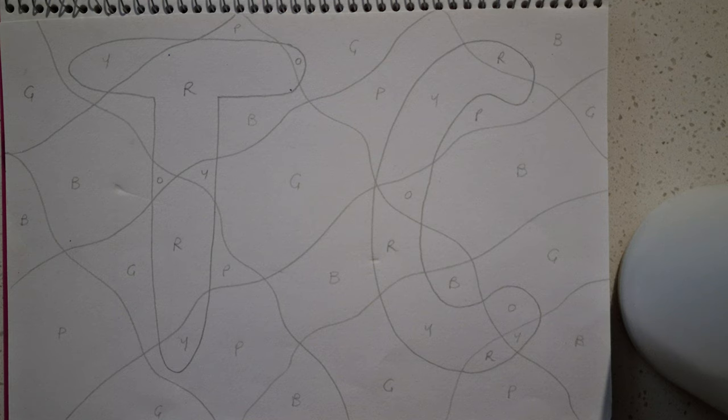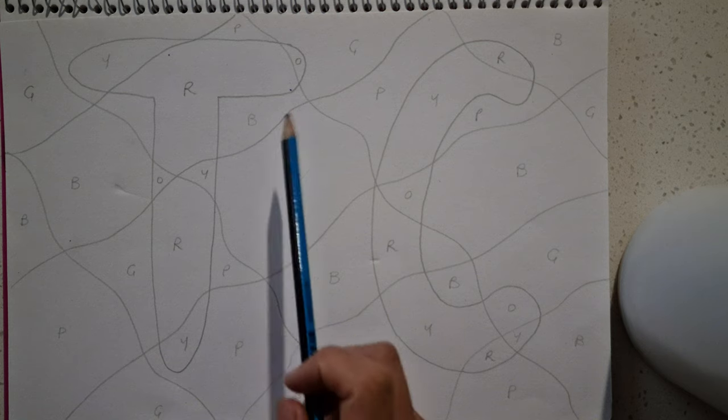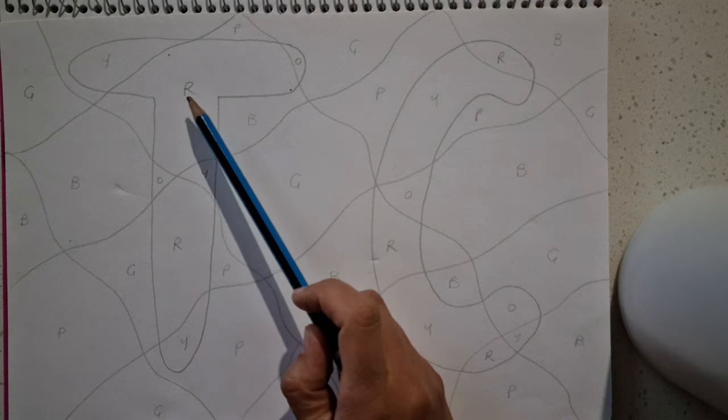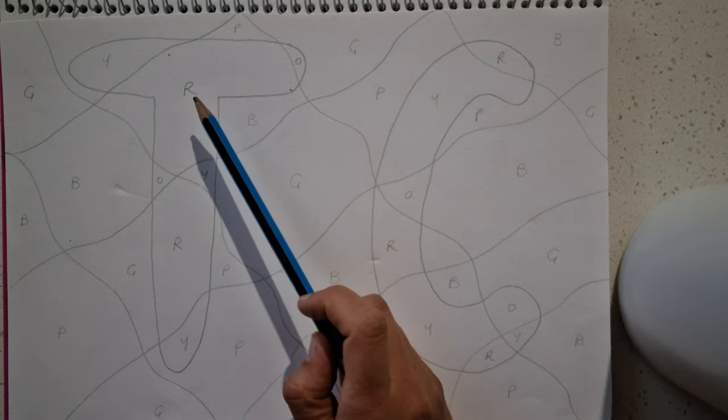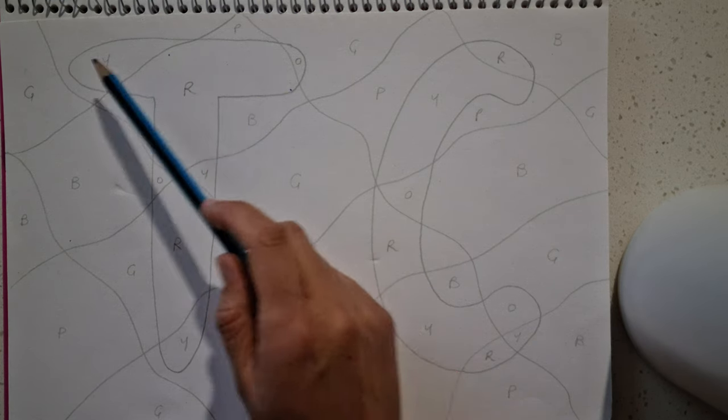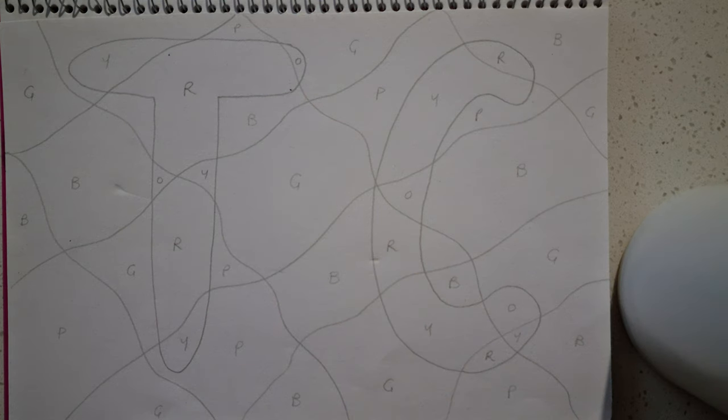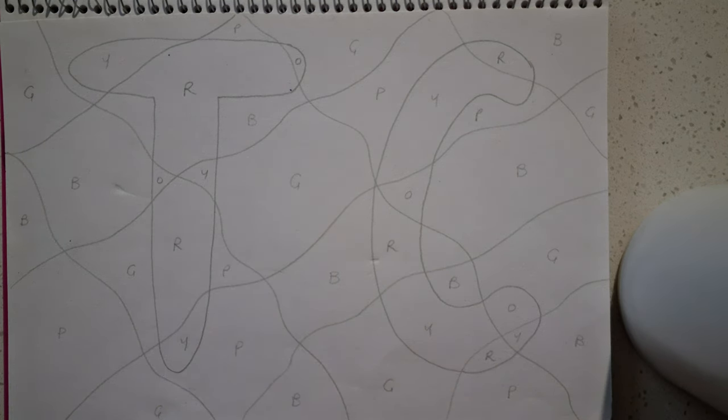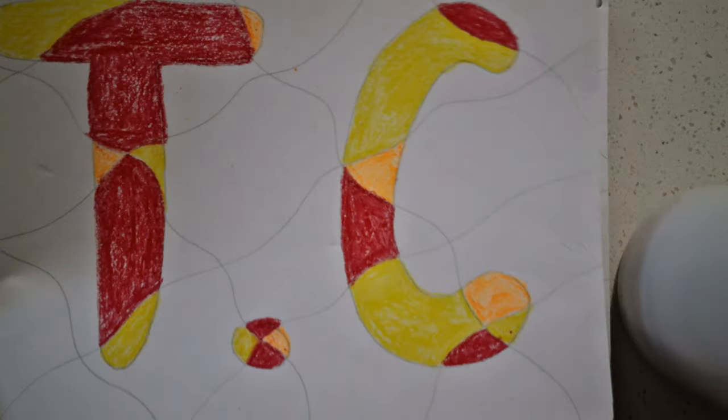The first thing you're going to do once you write in all the initials is if you've written them in quite dark, just grab an eraser and maybe go over them really lightly just so that when you color over the top of them you can't see the initial coming through. Basically you're going to color in your initials first and then you are going to color in the background.